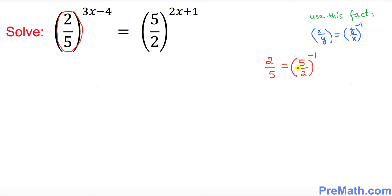So this is what I'm going to write down over here: 2 over 5 could be written as 5 over 2 power negative 1, and then there's another exponent over here which is 3x minus 4 equals to the right hand side as it is, no changes, so 2x plus 1.